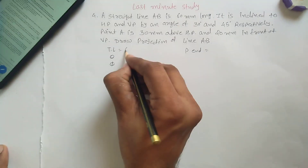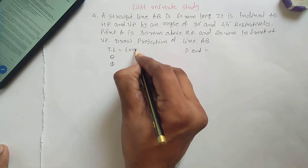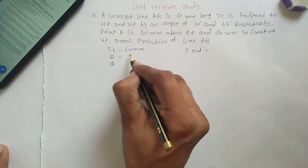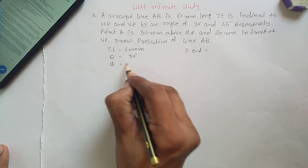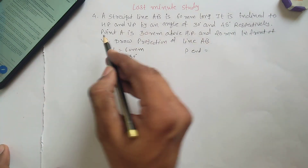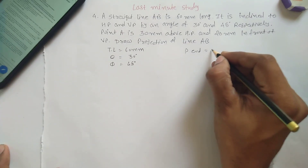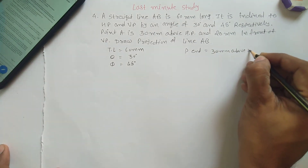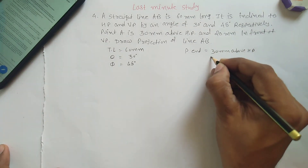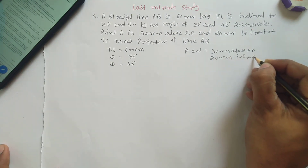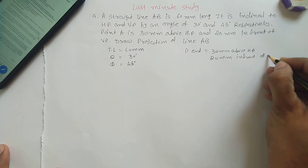The true length is 60 mm. The line is inclined to HP and VP — 30 degrees to HP and 45 degrees to VP. Point A is 30 mm above HP and 20 mm in front of VP.